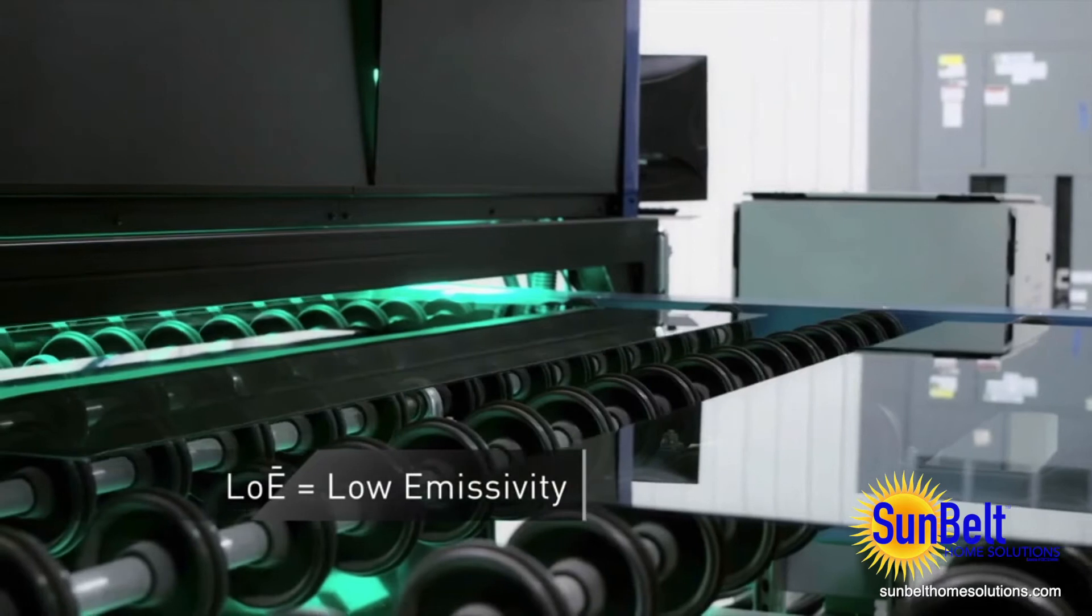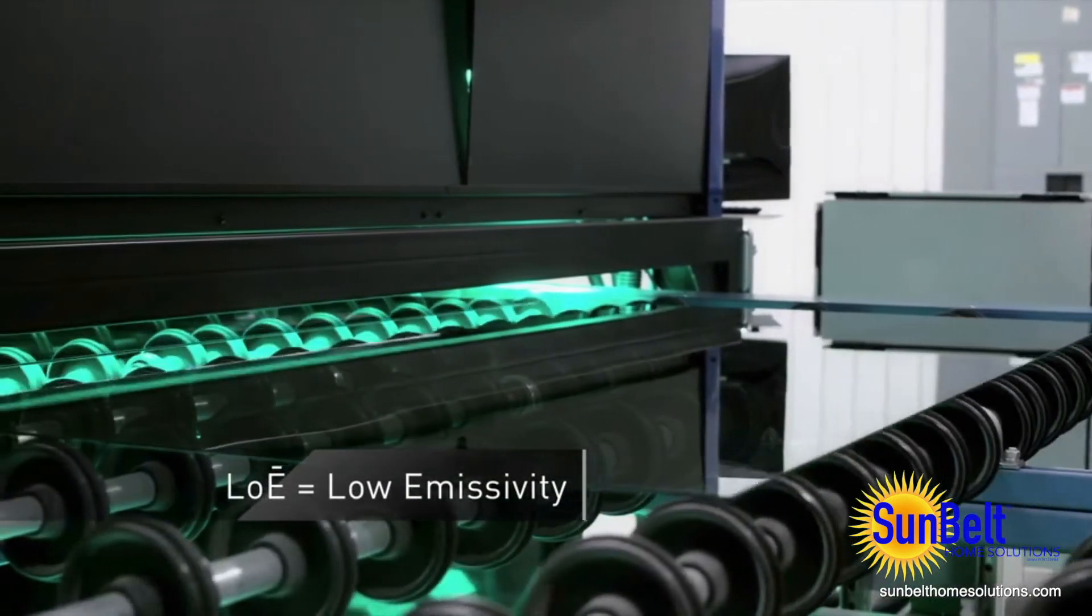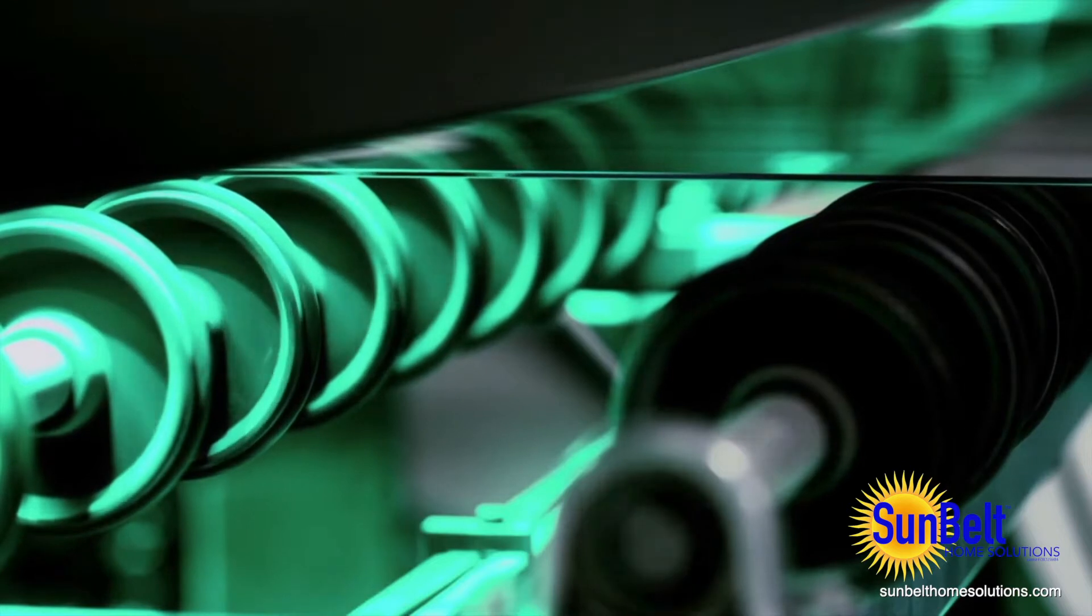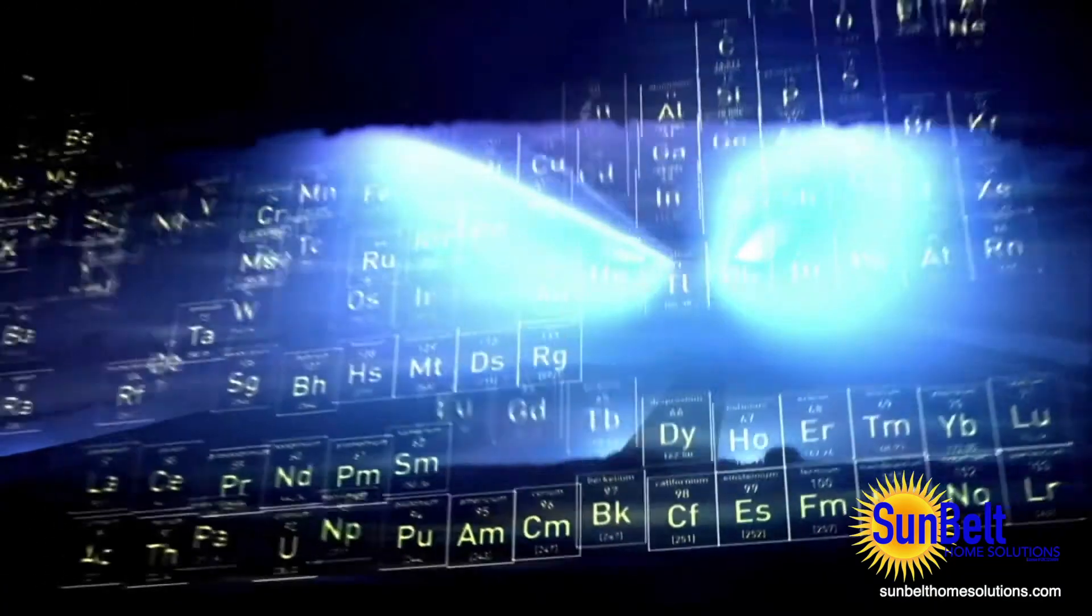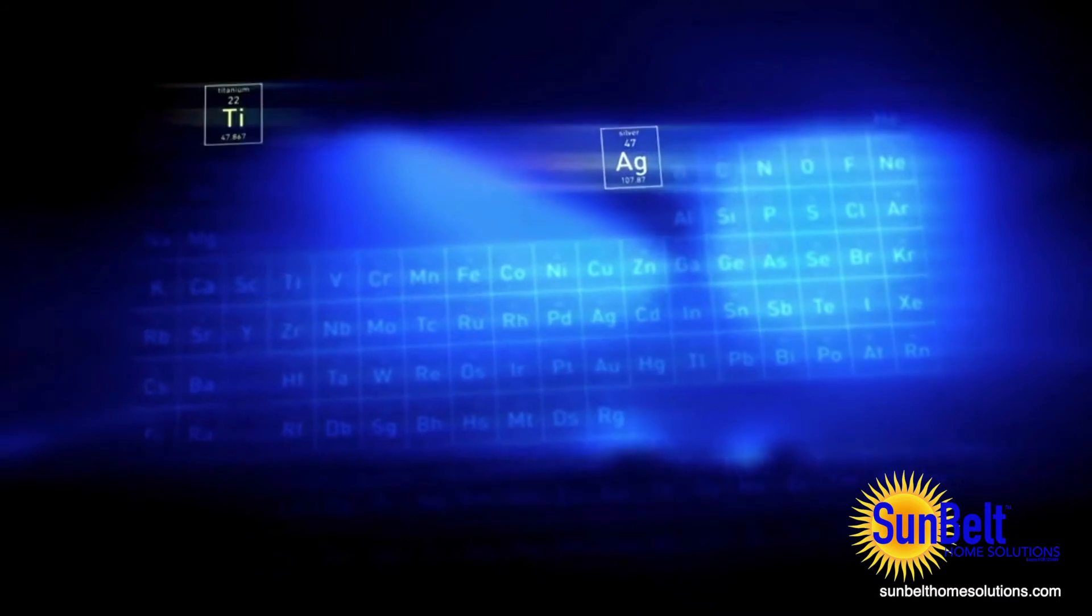Low emissivity coatings are metallic particles applied to raw glass in multiple optically transparent layers. These layers are made up of the purest of materials like silver, titanium and zinc.